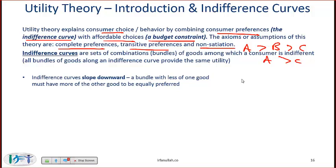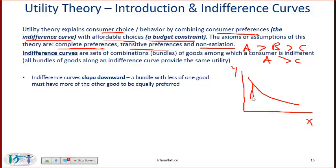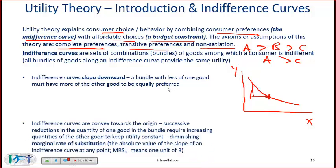Indifference curves slope downwards. So if you have two goods X and Y, this is generally the shape of the indifference curve. As you give up Y, you are equally happy if you have more of X. A bundle with less of one good must have more of the other good to be equally preferred.